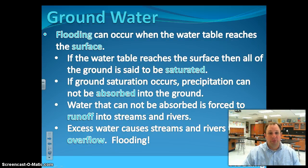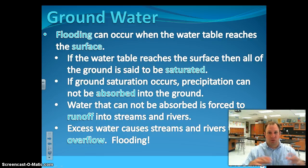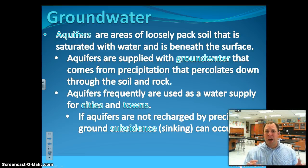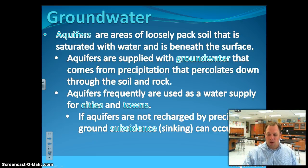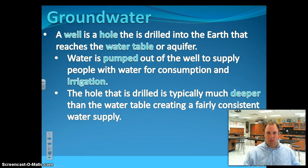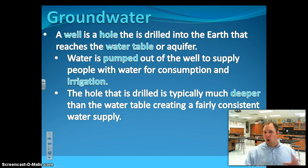Flooding occurs whenever the ground becomes so saturated with water it can't hold any more water. Therefore, all the water has to run off and runs off in creeks and rivers, and the creeks and rivers overflow. Different types of ways we get water out of the ground: one was an aquifer, where we have these large pockets of water below the ground that we drill down to and pump the water out.